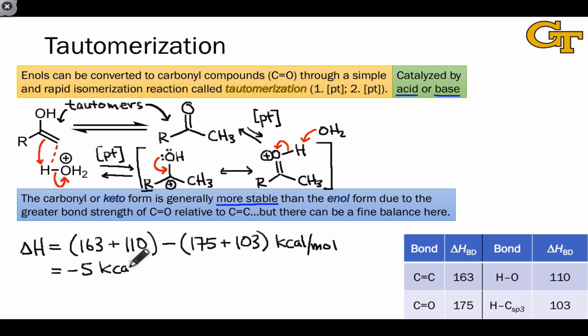The result here is negative 5 kilocalories per mole, indicating that the keto form is more stable than the enol form by about 5 kilocalories per mole. The difference isn't huge, but it's enough to bias the keto form significantly over the enol form in the majority of cases. There are some exceptions to this though, and there can be a fine balance between the keto and enol forms.